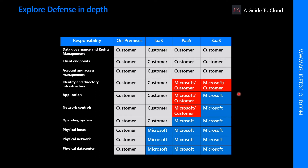As cloud computing moves from customer-controlled data centers to the cloud, the responsibility for security also shifts. Security of the operational environment is now a concern shared by both cloud providers and customers. By shifting these responsibilities to a cloud service like Azure, organizations can reduce focus on activities that aren't core business competencies. Depending on specific technology choices, some security protections will be built into the particular service while others will remain the customer's responsibility.